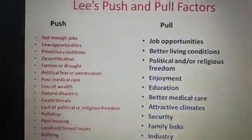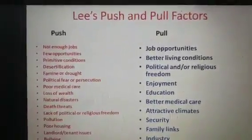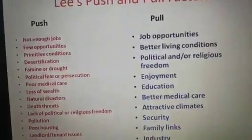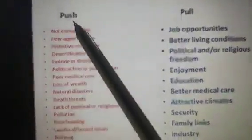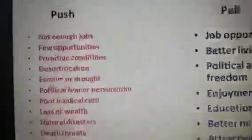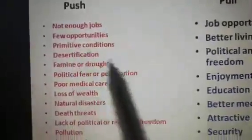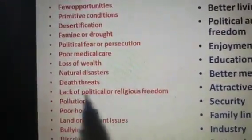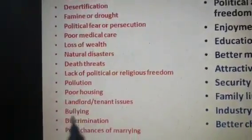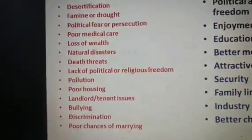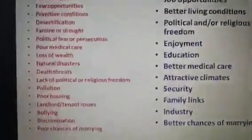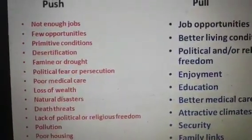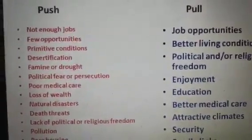Let us look at what types of push and pull factors Lee identified in narrating his theory of migration. Push factors include: not enough jobs, few opportunities, primitive conditions, desertification, famine and drought, political fear, poor medical care, loss of wealth, natural disasters, death threats, lack of political or religious freedom, pollution, poor housing, landlord or tenant issues, bullying, discrimination, and poor chance of marrying. Any one of these factors may cause people to move from one place to another — and each one is an area of research.